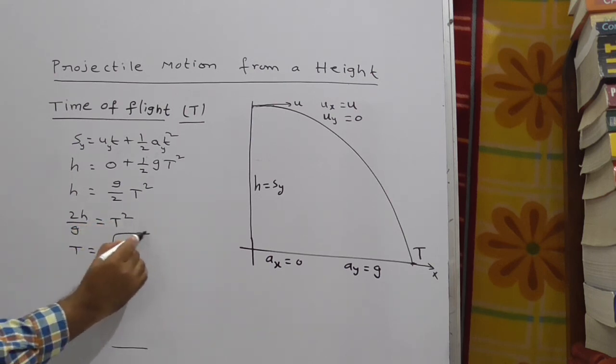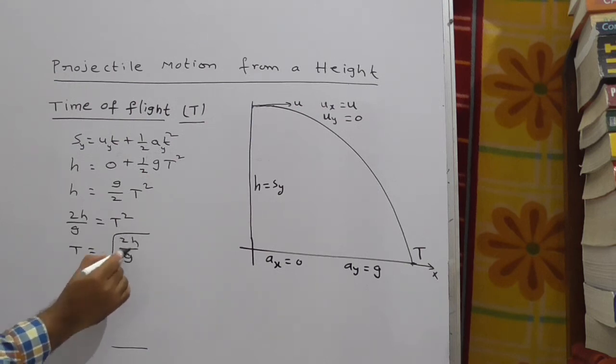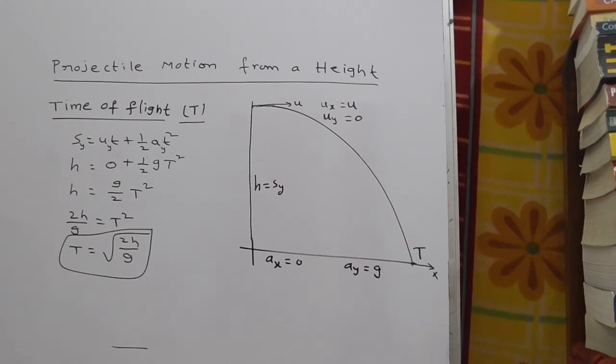T is equal to under root 2h by g. T is equal to under root 2h by g.